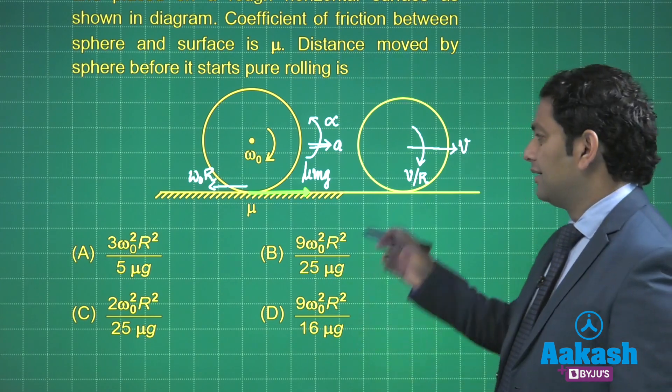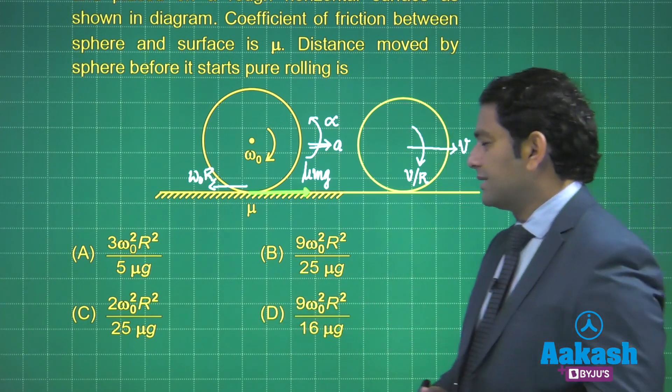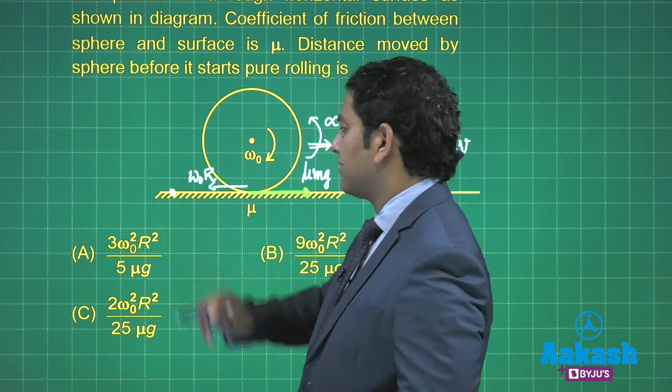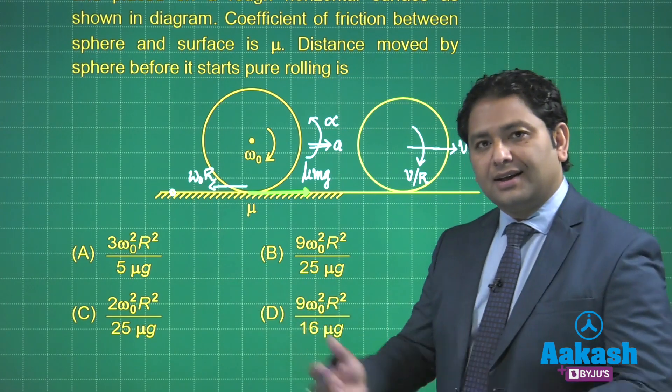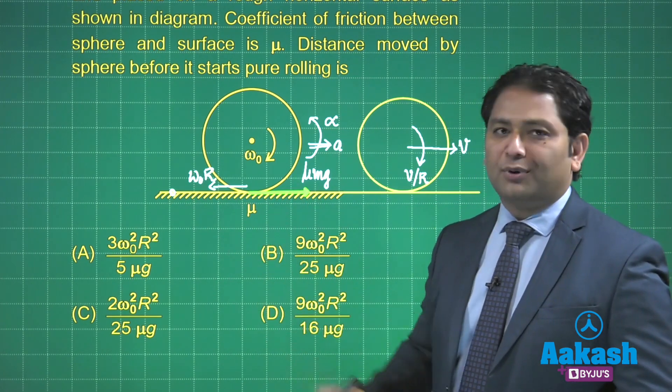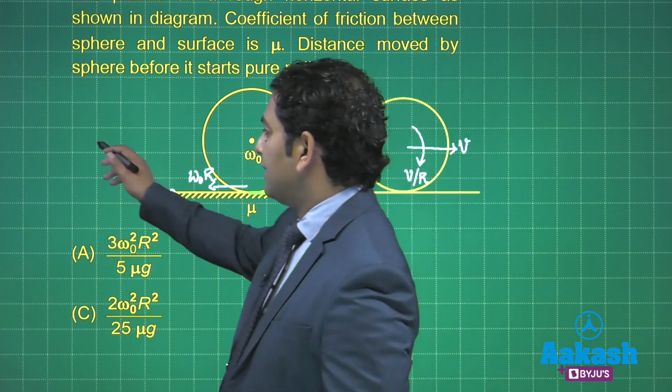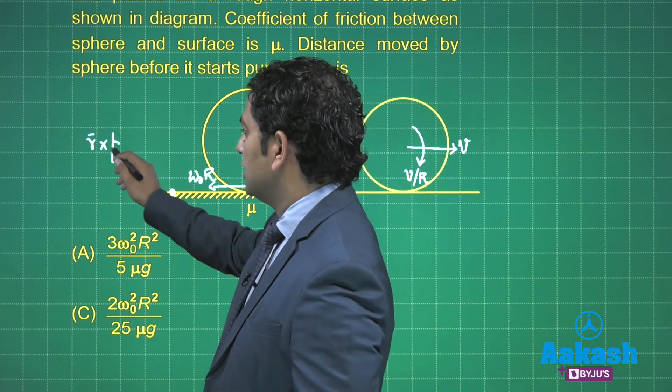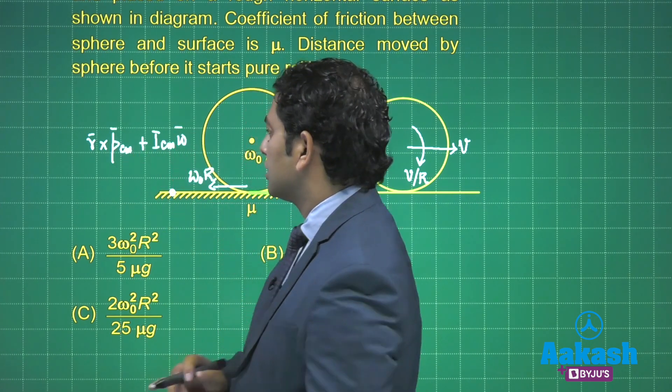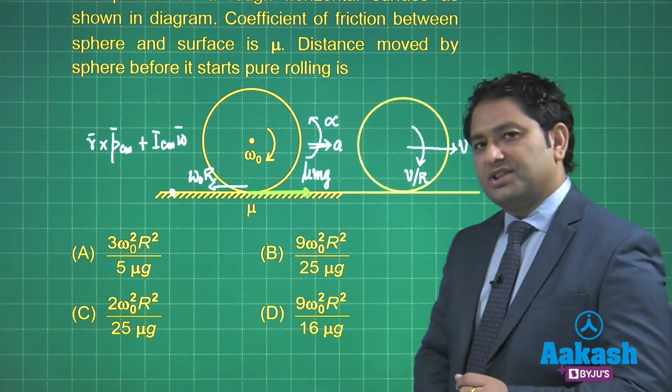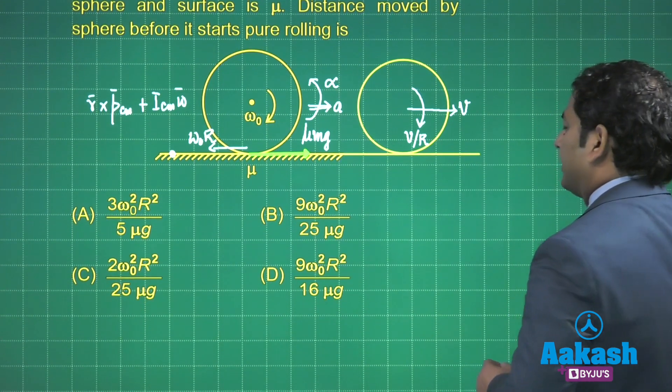The first job is how do we calculate this value of velocity. It is a very regular pattern question of conservation of angular momentum. If I take any point on the ground, the torque due to all the forces above this point is zero, indicating angular momentum above that very point is conserved. Now we have made all these strategies, so it is time that we start solving it.